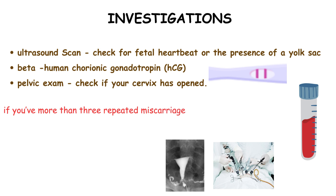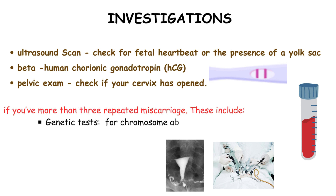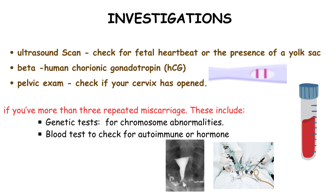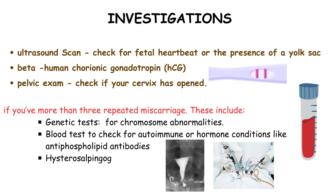If someone has had more than three miscarriages, further investigations may be needed. These can involve genetic tests to look for chromosome abnormalities and blood tests to check for autoimmune or hormone conditions like antiphospholipid antibodies. Other tests such as hysterosalpingogram, hysteroscopy, and laparoscopy may also be recommended to examine the reproductive organs and identify any potential issues.